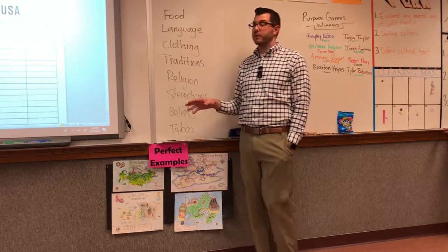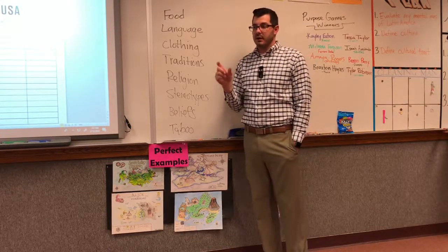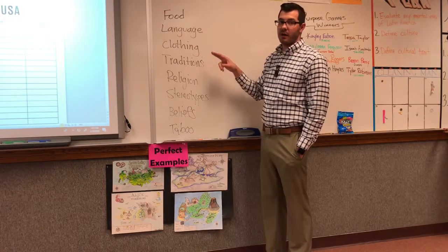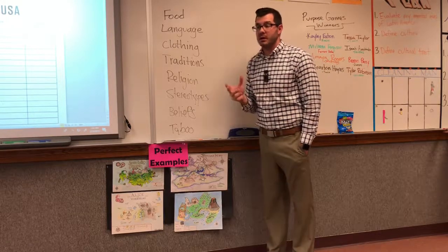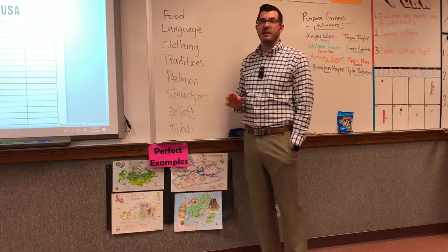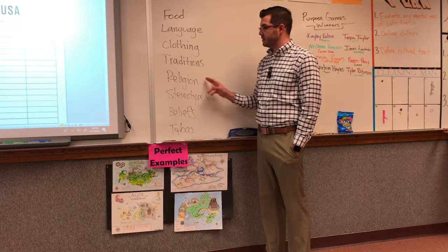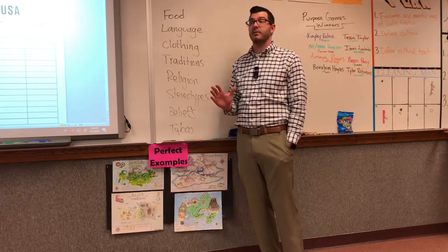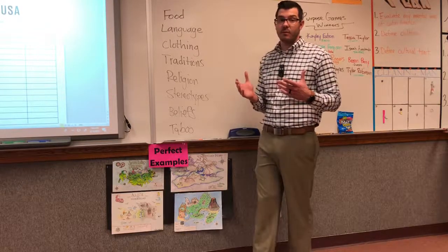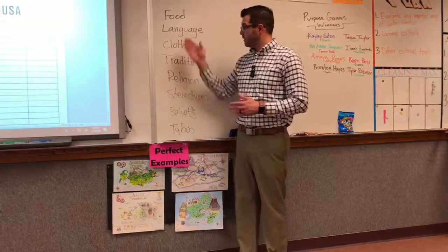A very quick overview. Food — what is eaten and how it is eaten. Language — could be specific phrases that are lost on those outside of the culture. Clothing — what is worn and how it is worn. Traditions — like Christmas or family traditions. Religion. Stereotypes — a statement about an entire group of people, based on one. Beliefs are different from religion in that beliefs can just be beliefs about something, like the number 13 is unlucky. Lastly, taboo is when someone does something offensive because it is generally understood as something you do or do not do. Those are our cultural traits.